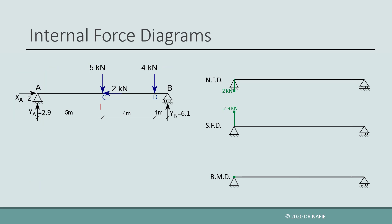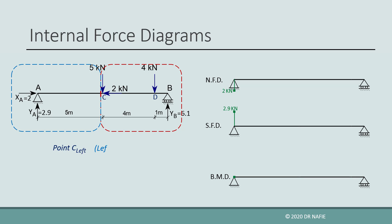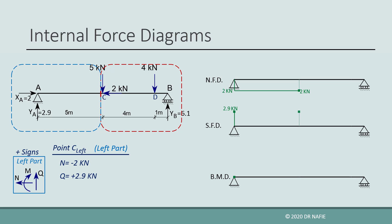Next, we move to the point just to the left of point C, using the left part. The normal force does not change since we still have only the 2 kN reaction horizontally, so N = −2 kN. The same argument applies for the shear force, giving +2.9 kN. The bending moment is calculated by taking the moment of all forces in the left part about point C. XA passes through C and is not included; YA multiplied by an arm of 5 meters gives a moment of +14.5 kN·m. These values are drawn and connected to the previous points.